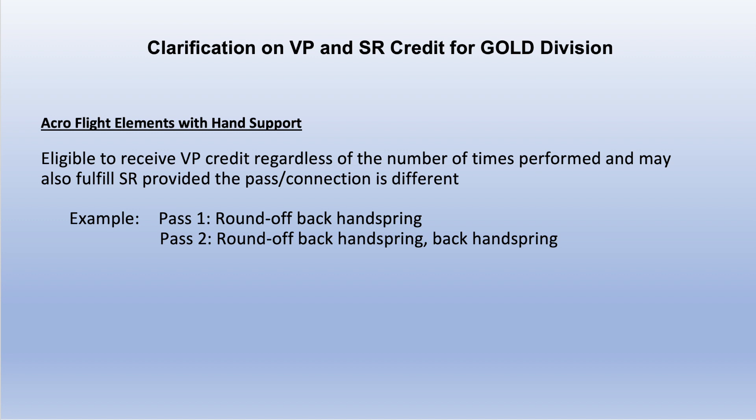In Excel, acro flight elements with hand support are eligible to receive value part credit regardless of the number of times performed, provided the pass connection is different. For example, if Pass 1 is a round-off back handspring and Pass 2 is a round-off back handspring back handspring, in the Gold division this would meet Special Requirements 1 and 2 because the passes are different.